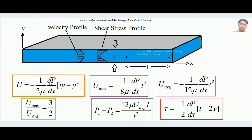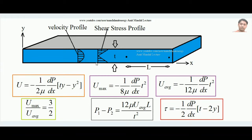The velocity formula for flow between parallel plates is: u = −(1/2μ)(dp/dx)(ty − y²), where t is the distance between the two plates, and y is the position measured from the bottom plate. The negative sign again compensates for the negative dp/dx to keep velocity positive.